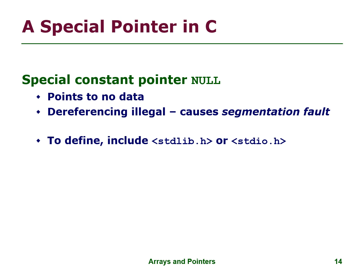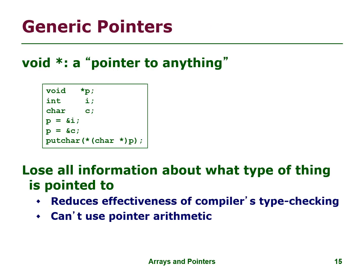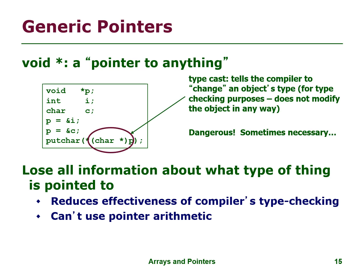Here is a special pointer in C: the null pointer, a special constant pointer to no data. Dereferencing it is illegal and causes a segmentation fault. To define it, include stdlib.h or stdio.h. Generic pointers — void star — are a pointer to anything. Typecast tells the compiler to change an object's type for type-checking purposes, but does not modify the object in any way.